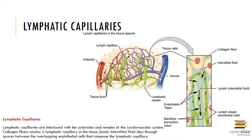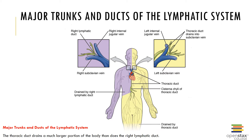Lymph flows from lymph capillaries into larger lymph-collecting vessels that lead toward the body trunks. Here we can see the major trunks and ducts of the lymphatic system. Like veins, the lymph-collecting vessels possess valves which are located very close together and bulge noticeably. As a result, large lymph-collecting vessels resemble a string of beads. Pressures within the lymph-collecting vessels are very low, and the valves are required to prevent the backflow of lymph and to maintain normal lymph flow toward the thoracic cavity.